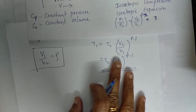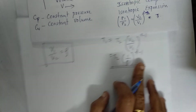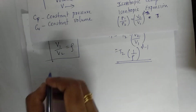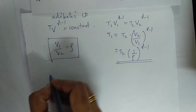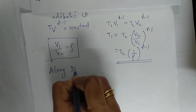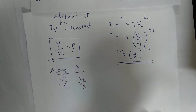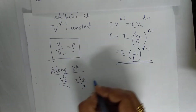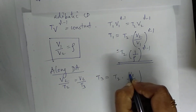We now consider the compression ratio rho and the cutoff ratio E. For the constant pressure process, V2/T2 = V3/T3, so T3 = T2 × (V3/V2) = T2 × E, where E = V3/V2 is the cutoff ratio.